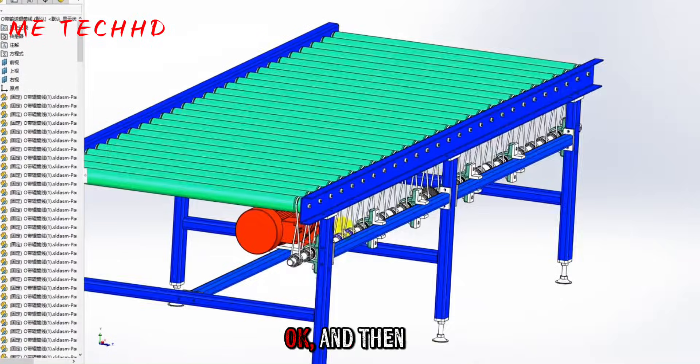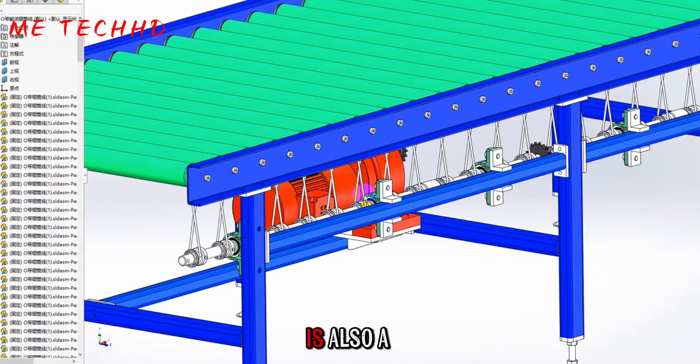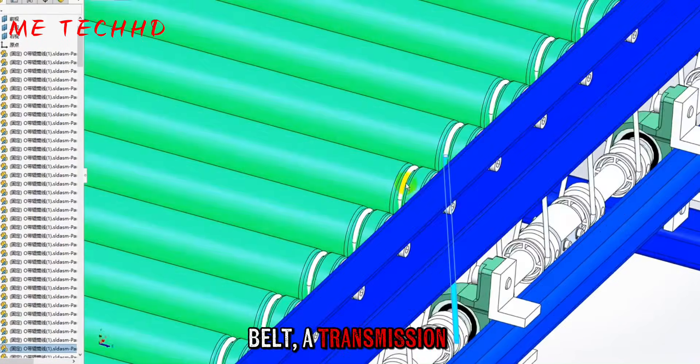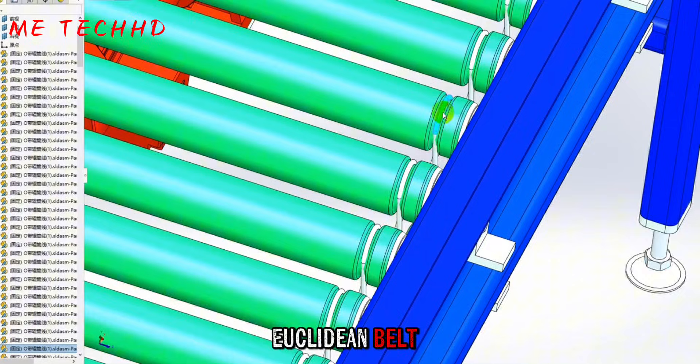The third type is also a belt, a transmission in this form called a European belt or O-belt.